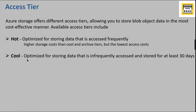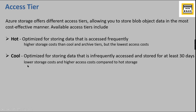The Cool access tier is optimized for storing data that is infrequently accessed and stored for at least 30 days. This is another option to store your data. In Cool tier, the storage cost is lower but the access cost is higher compared to Hot storage.